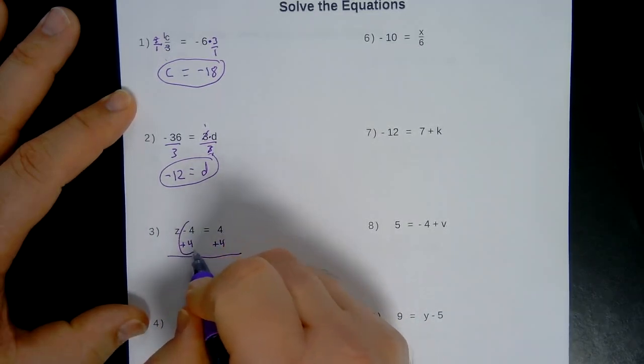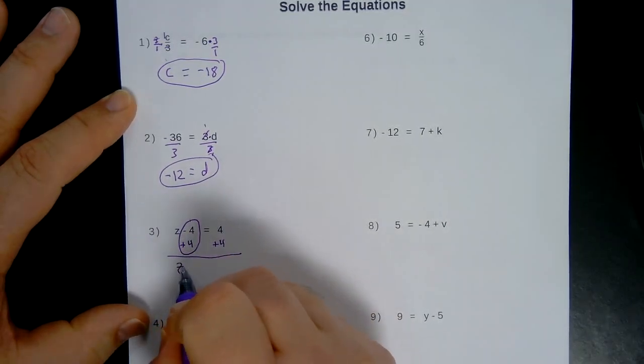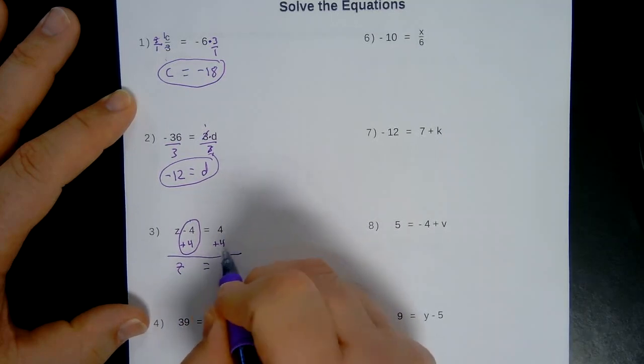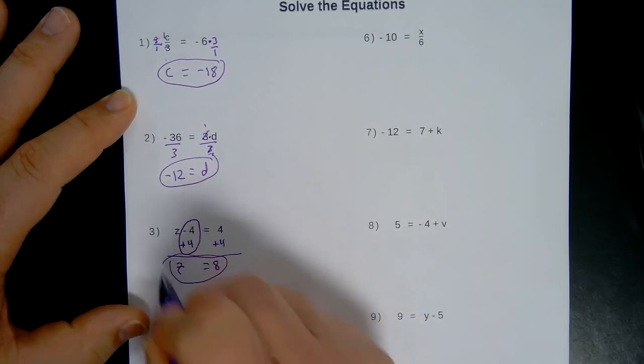The negative 4 and positive 4 give you a big fat 0 there. That's why I'm circling it. So we have Z is equal to 4 plus 4 is 8. And there's my final answer.